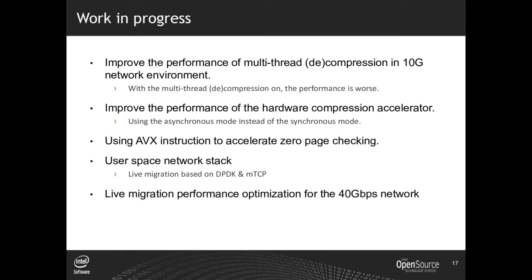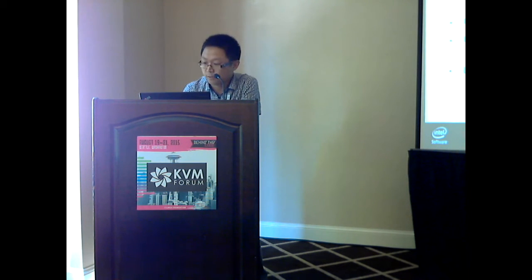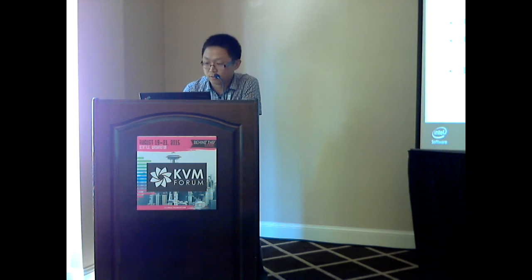There are some works in our pipeline. These include improving the performance of multi-thread compression in a 2 Gbps network environment, improving the performance with a hardware compression accelerator, using AVX instructions to accelerate zero-page checking, using a user-space network stack to accelerate data transmission, and live migration performance optimization for 40 Gbps networks. If you are interested, maybe we can work on these together.